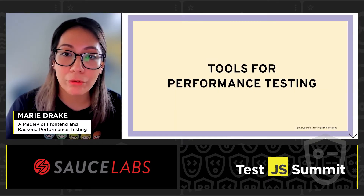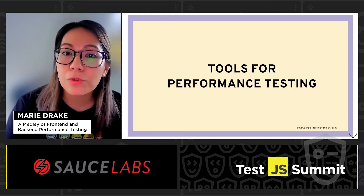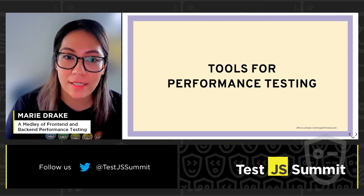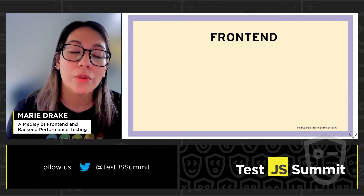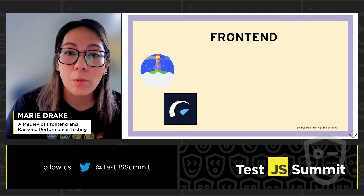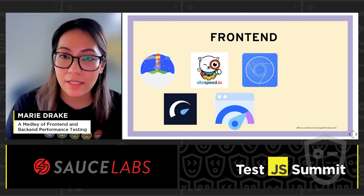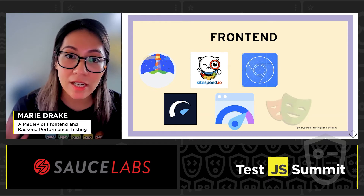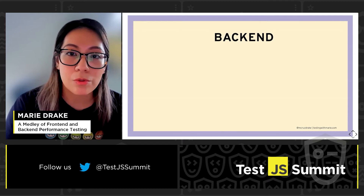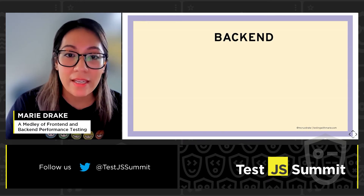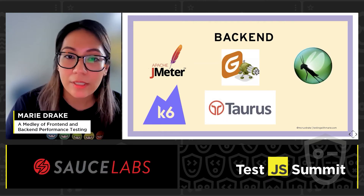I want to talk a bit about performance testing tools, because there's a variety of tools available to support your performance testing needs. From a front-end perspective, tools such as Lighthouse, Google PageSpeed, sitespeed.io, WebPageTest, and even your developer tools can help. Other testing tools such as Playwright and Cypress can also offer ways to measure front-end performance. For the back-end there's also JMeter, k6, Gatling, Taurus, Locust, and Artillery, just to name a few.